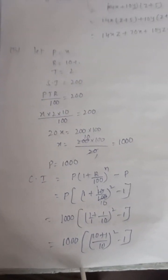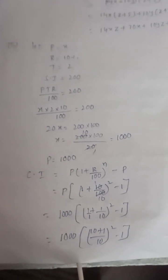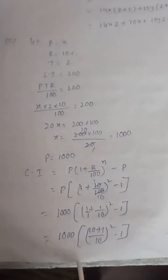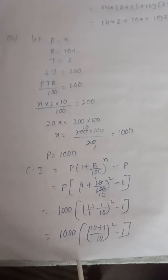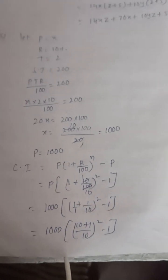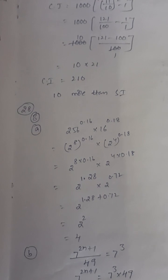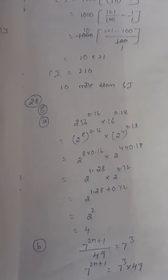Next, question 27B: simple interest problem. Principal amount is given. Simplifying gives 1000. For compound interest, using the formula P(1 + R/100) power N minus P. Simplifying gives compound interest equals 210. The difference between compound interest and simple interest equals 10.